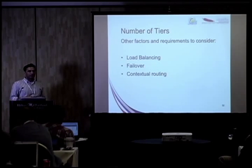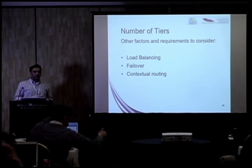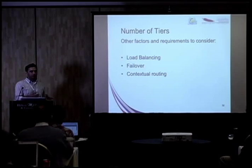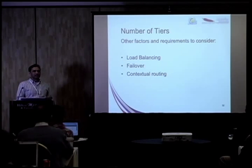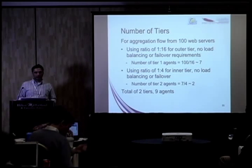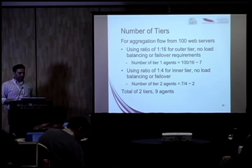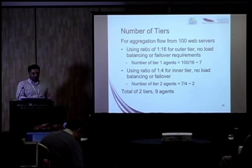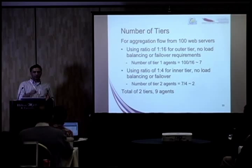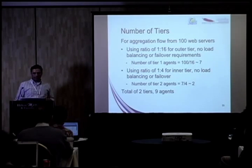The kind of factors you'll fold into planning include whether you want load balancing, failover, and any contextual routing. If you ever try this yourself, I'd suggest disregarding these factors first — form your topology, lay that out, see how it works, and then do a secondary analysis to see how you can add failover and load balancing on top of it. Using this rule of thumb, starting with an example of 100 web servers going into a destination HDFS cluster, and using a 1:16 ratio for the outer tier, you'd get about seven tier-one agents. Then reducing to a 1:4 ratio gives you two tier-two agents. That's your topology for this use case.